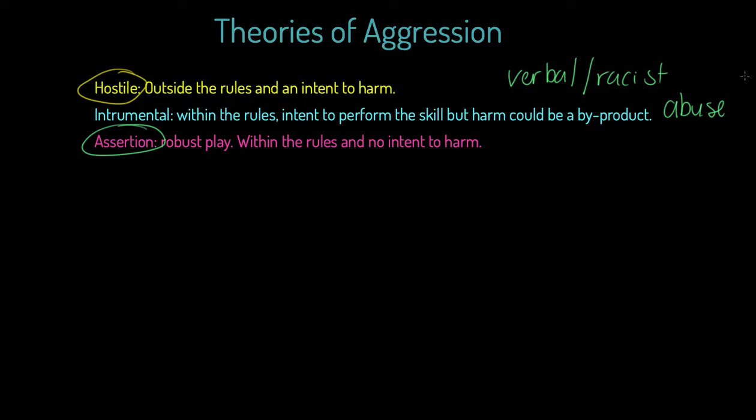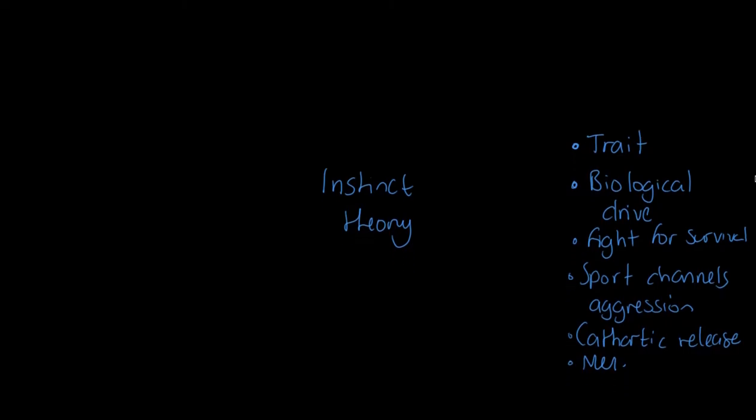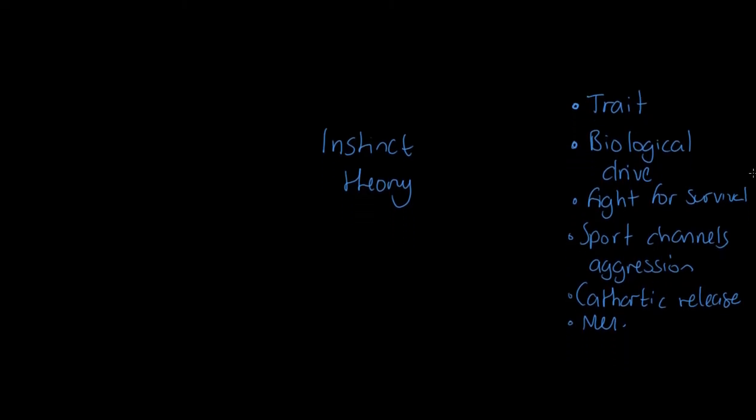Now with all that said, I want to get to the main two interactionist theories quite quickly. So I've written out for you what instinct theory is. Instinct theory is a trait theory suggesting that violence or aggression comes from biological drive, the fight for survival. It's effectively Darwinian development, and the idea is that sport is a channel for aggression and it gives that cathartic release. If you're not sure what catharticism is, it means stress release, energy release, and sport can do that.